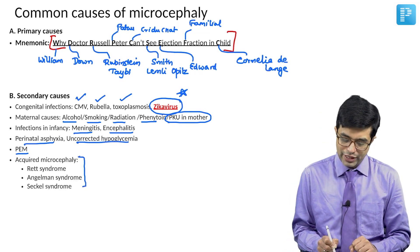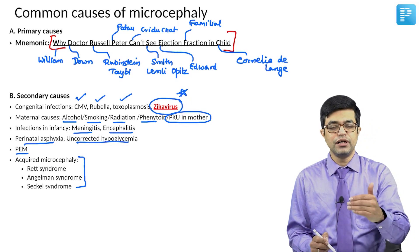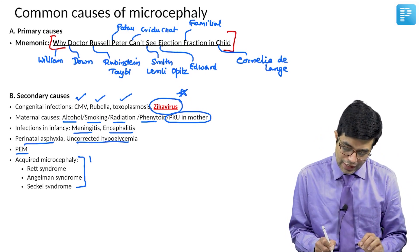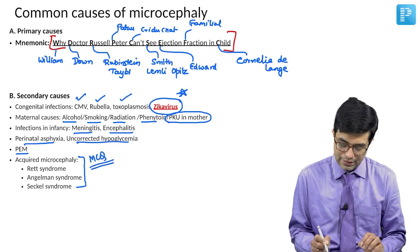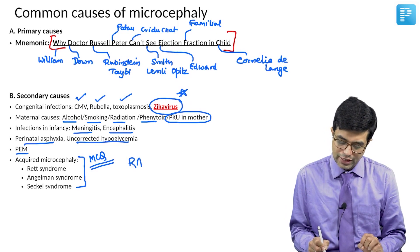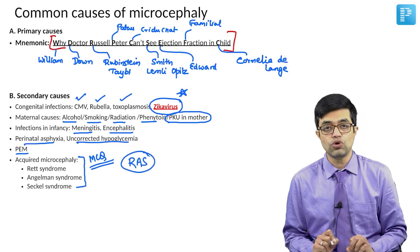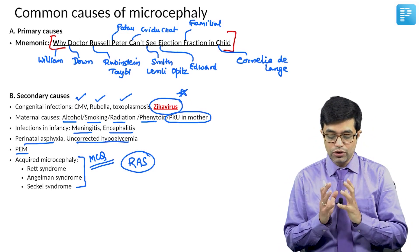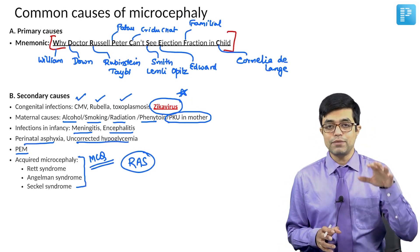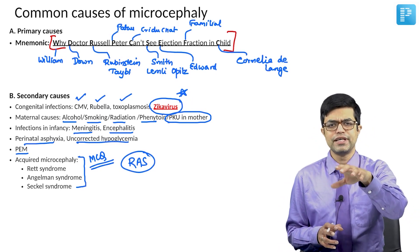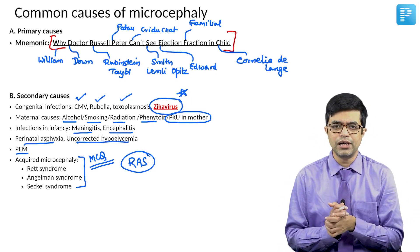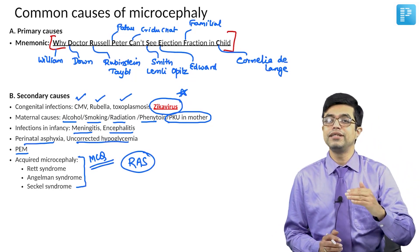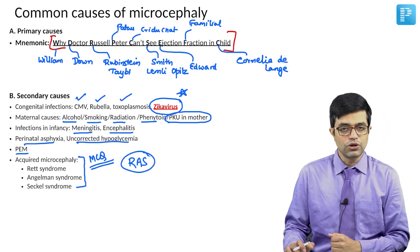And then you have important acquired causes. Many of these causes which I mentioned earlier can be acquired or congenital. But this is purely acquired microcephaly, which are asked in MCQ entrance exams. So I have mentioned them separately. You can remember the mnemonic R-A-S. R stands for Rett syndrome. A stands for Angelman syndrome. And S stands for Seckel syndrome. These are the three important causes of acquired microcephaly, where at birth the head circumference is normal. Till 4, 6, 8 weeks of life, the head circumference is usually normal. And later on, you find that the head circumference tends to fall below minus 3 standard deviations. These are the common causes of microcephaly.